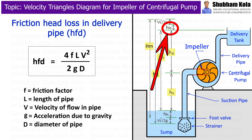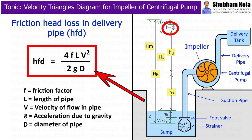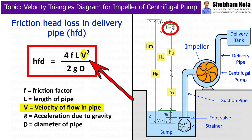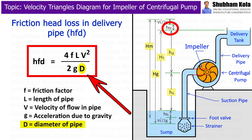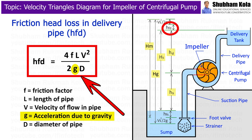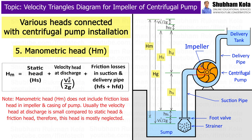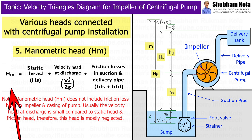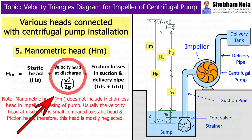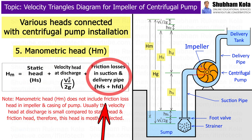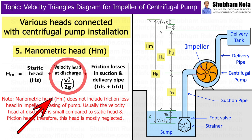The friction head loss in the delivery pipe, HFd, is given by the formula: 4·F·L·V² / (2·g·D), where F is the friction factor, L is the length of pipe, V is the velocity of flow in pipe, D is the diameter of pipe, and g is the acceleration due to gravity. It should be noted that manometric head does not include friction loss in the impeller and casing of the pump. Usually, the velocity head at discharge is small compared to static head and friction head, and is therefore mostly neglected.